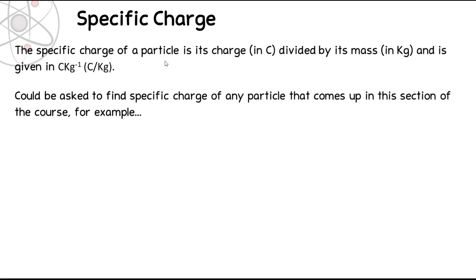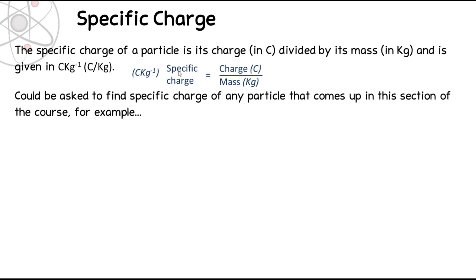The specific charge of a particle is its charge divided by its mass. It's important that you know that in order for your specific charge to be given in the standard unit, which is coulombs per kilogram, the charge has to be measured in coulombs and the mass has to be measured in kilograms. So before you do any calculations, make sure you convert your units, otherwise you will lose the marks.